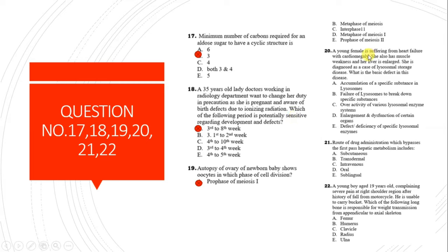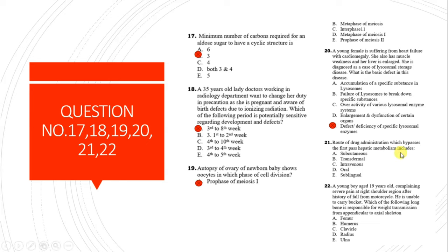Question 20: A young female with heart failure, cardiomegaly, muscle weakness, and enlarged liver is diagnosed with lysosomal storage disease. The specific defect in this disease is E - a defect or deficiency of specific lysosomal enzymes. In lysosomal storage disease, there is a deficiency of a specific lysosomal enzyme.